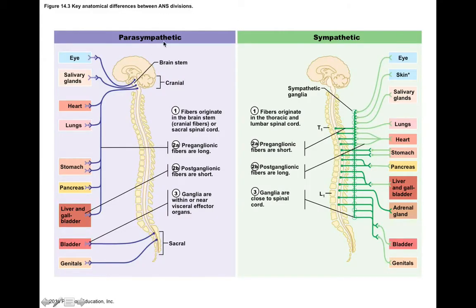Comparing the two divisions: the parasympathetic nervous system is called the craniosacral division because most parasympathetic information is carried by cranial nerves, as well as some sacral spinal nerves which go to pelvic organs. The sympathetic nervous system is called the thoracolumbar division because its information comes from thoracic and lumbar spinal nerves, which go out to sympathetic ganglia and then connect to their respective organs.